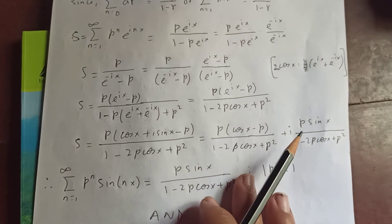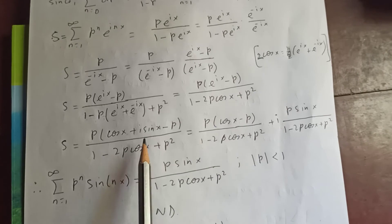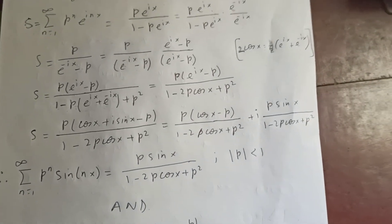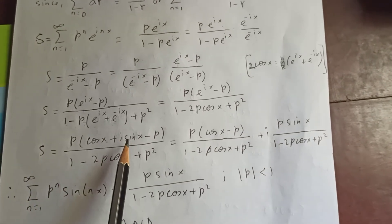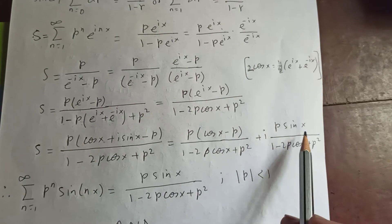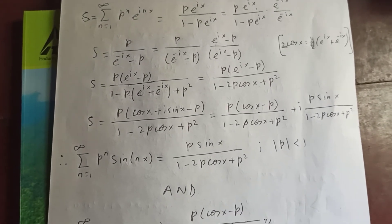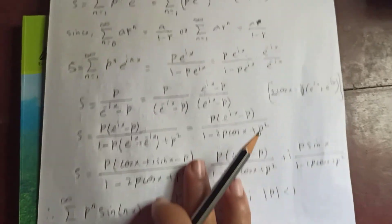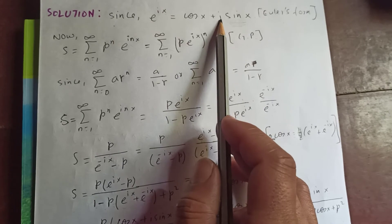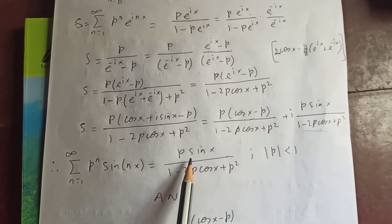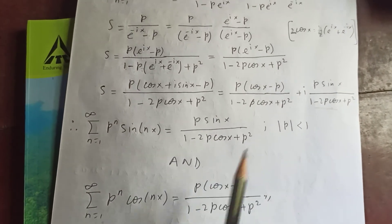Substituting e^(ix) = cos(x) + i·sin(x), we get H = (p·cos(x) + i·p·sin(x) − p) / (1 − 2p·cos(x) + p²). Separating real and imaginary parts: the real part is (p·cos(x) − p) / (1 − 2p·cos(x) + p²), and the imaginary part is p·sin(x) / (1 − 2p·cos(x) + p²). Therefore, our sum S = the imaginary part, giving: sum from n=1 to infinity of p^n · sin(nx) = p·sin(x) / (1 − 2p·cos(x) + p²).